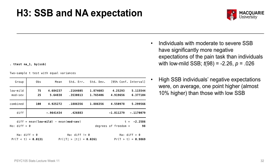We can conclude that individuals with moderate to severe somatic symptom burden have significantly more negative expectations of the pain task than individuals with low to mild somatic symptom burden. High somatic symptom burden individuals' negative expectations were on average about one point higher, which is almost 10% higher than those with low SSB. Remember, one point is on an 11-point scale ranging from 0 to 10, so 1 out of 11 corresponds with almost a 10% difference — giving us an idea of how substantial the difference is. Our hypothesis was supported.